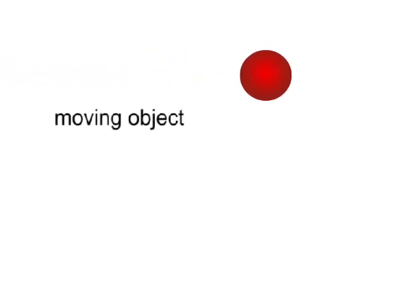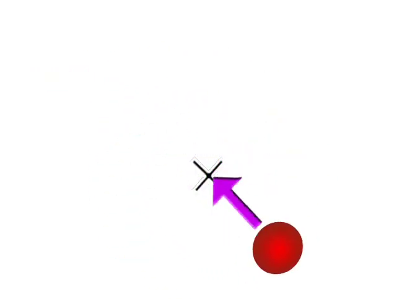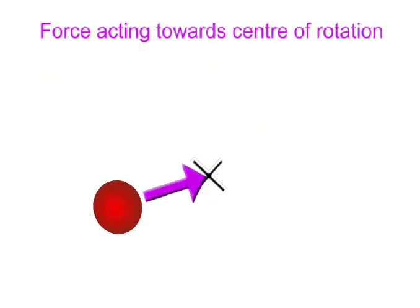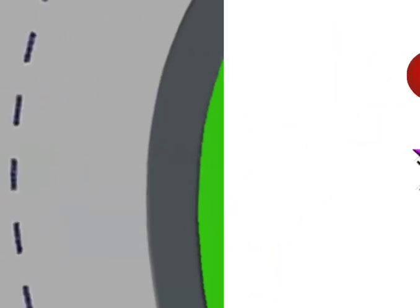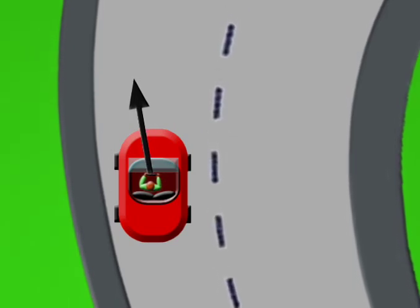You see, all objects that move at a certain speed would normally continue to move in a straight line. In order to make something move in a circle, you have to supply force to it that pushes it towards the point you want to rotate about.